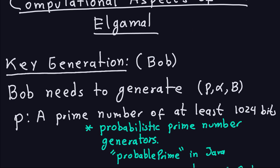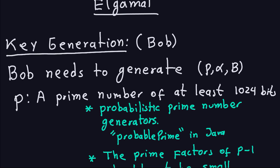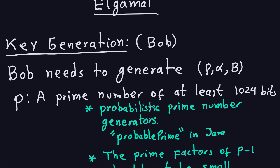The first thing you have to do is the key generation, which is how you compute the public parameters. This is usually done by Bob, or a third party who sets up those parameters. Assuming Bob is the one who does it, he needs to generate P, which is a prime number, alpha as a generator, and B is that exponentiation with a randomly chosen number.